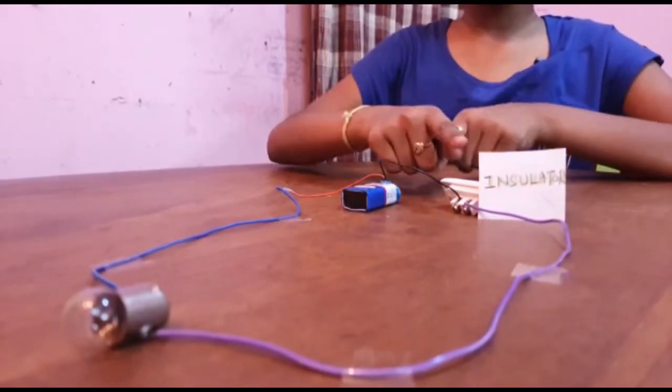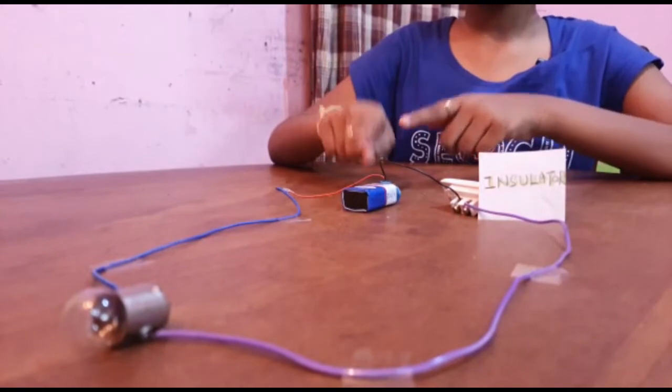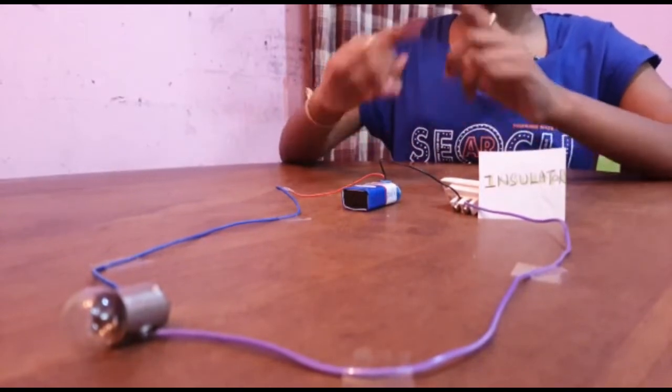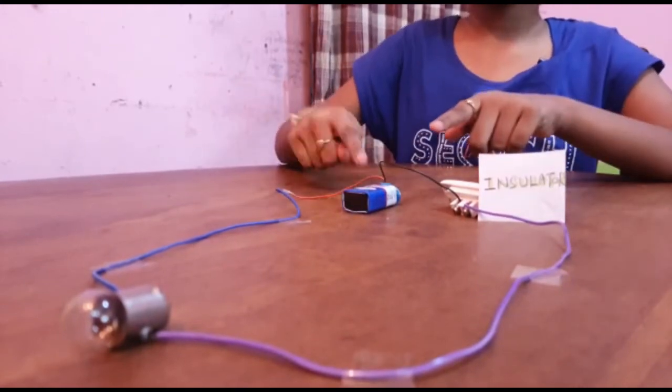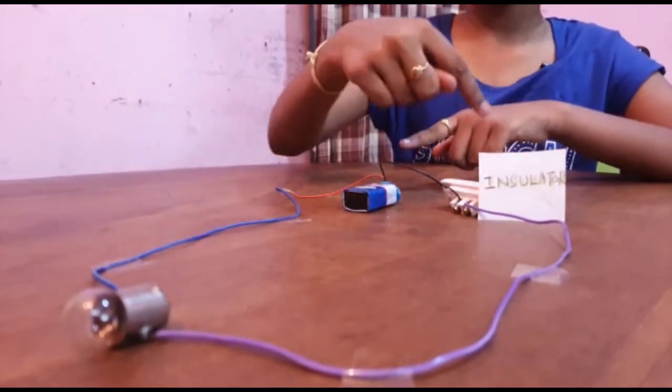In another case, when we connect insulators or insulating devices in an electric circuit, electricity does not flow even though the circuit path is complete.